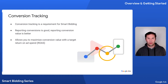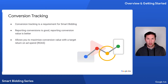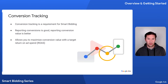Smart Bidding is designed to optimize for conversion or conversion value. In order to use Smart Bidding, your account must have conversion tracking enabled. If you only report conversion metrics, that's okay, but it's better to also report conversion value so that you can optimize towards different values for each conversion action. Once you are reporting meaningful conversion values, you can use a value-based bidding strategy like Maximize Conversion Value with a target return on ad spend, or ROAS.